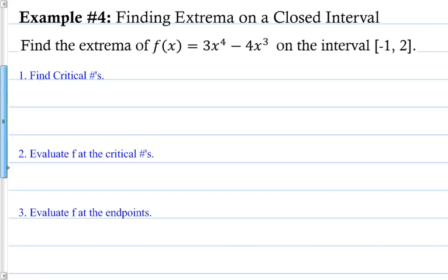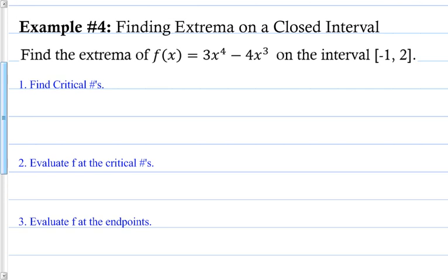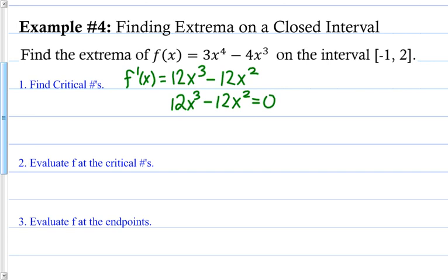Example 4: Find the extrema of f(x) = 3x⁴ - 4x³ on the interval [-1, 2]. The endpoints are -1 and 2. Step 1, find critical values: f prime of x = 12x³ - 12x². Set equal to 0. I see a GCF of 12x², so factor to get 12x²(x - 1) = 0. From 12x² = 0, x = 0. From x - 1 = 0, x = 1. Both are in the interval [-1, 2].